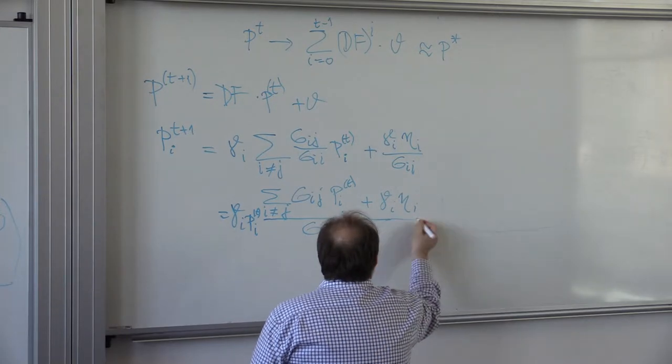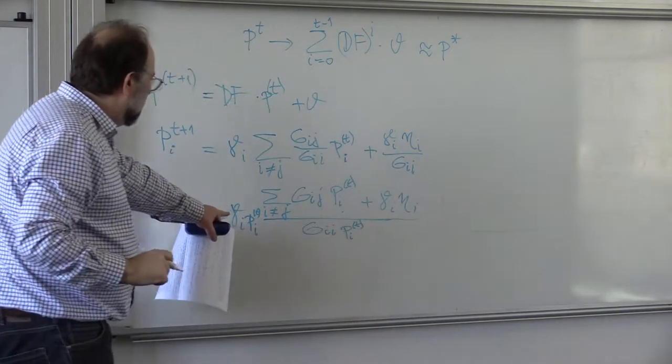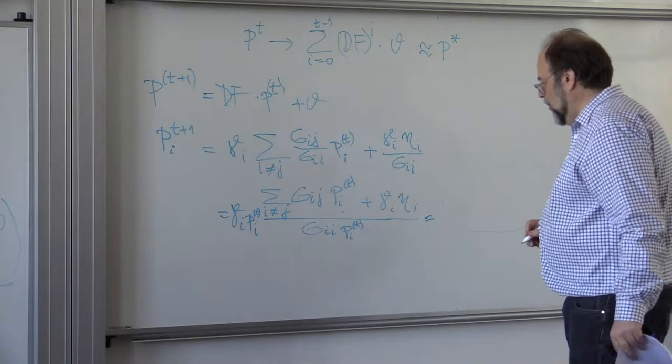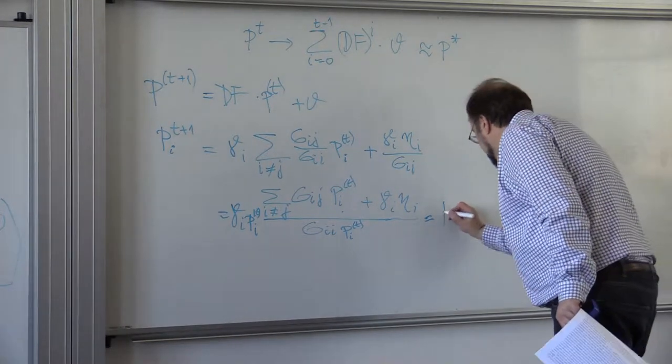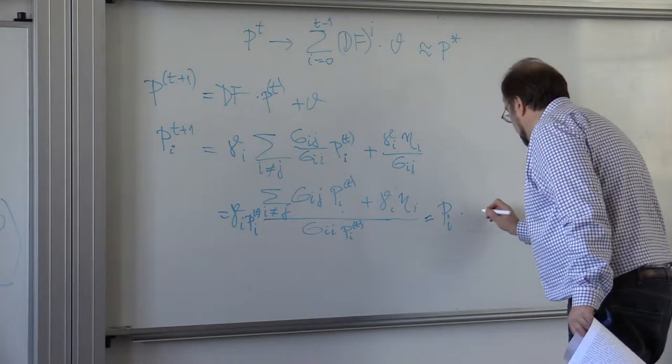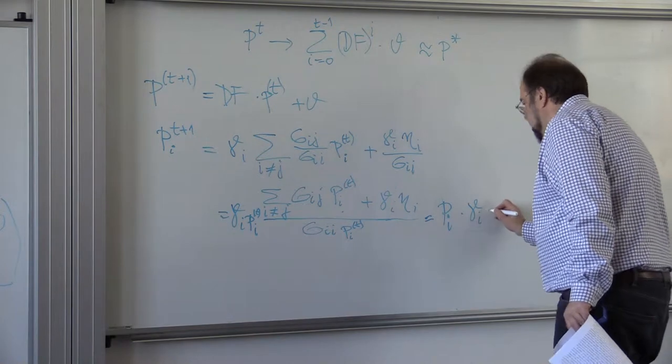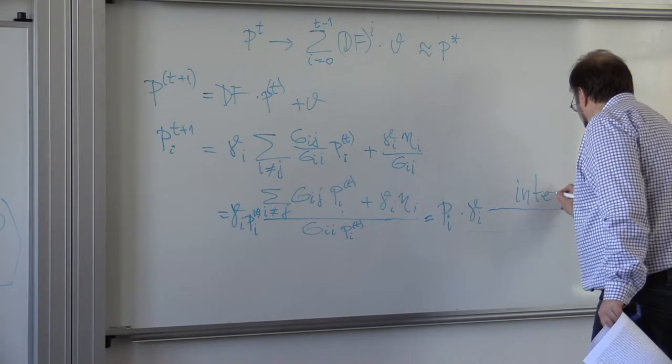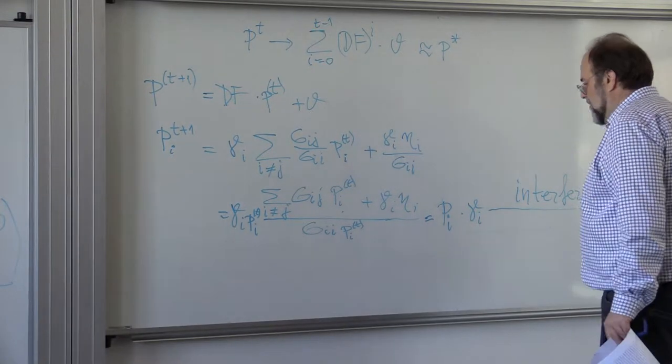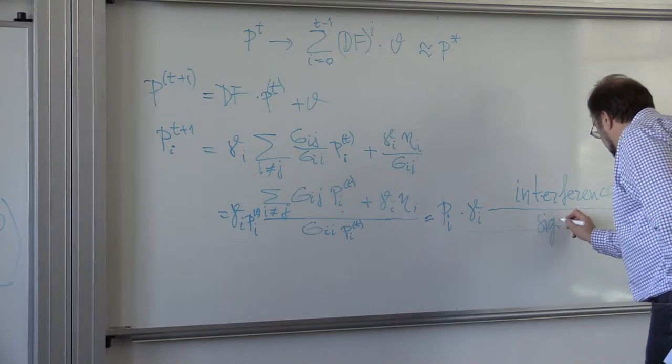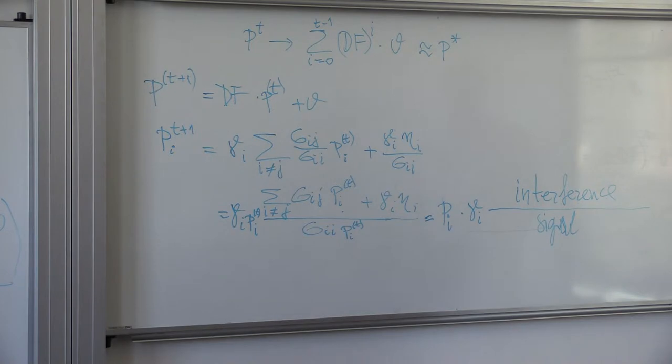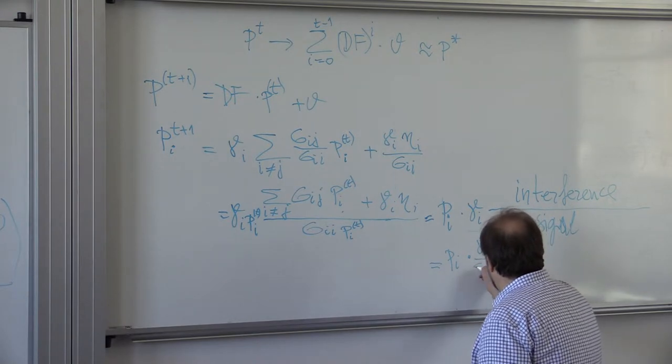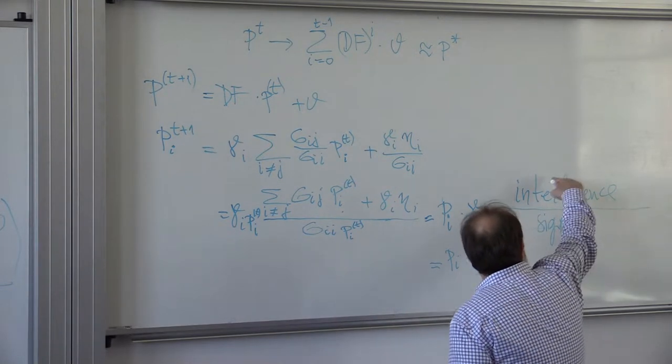But what is this, this is equal to P I multiplied by gamma I, and this is precisely interference, right? And this is precisely the signal, right? So this is nothing but P I times gamma I divided by reciprocal, right? Because it should be this, so it should be on top, this on bottom.